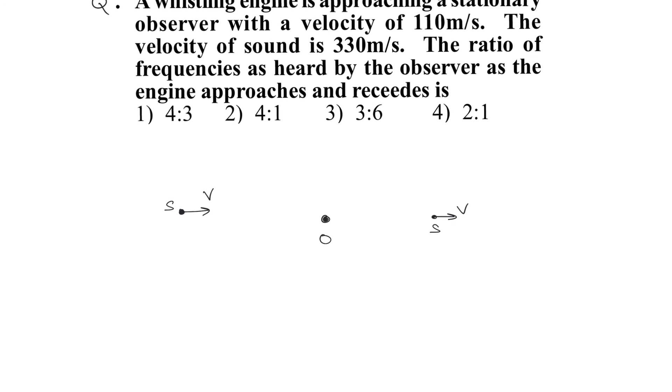When the source is approaching the observer, the apparent frequency is n0 times c divided by c minus v. When it is moving away from the observer, it is n0 times c divided by c plus v.